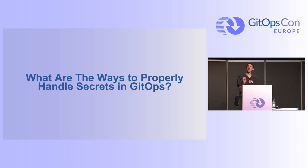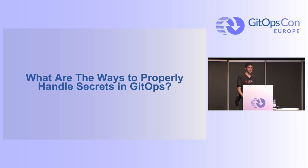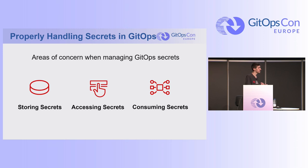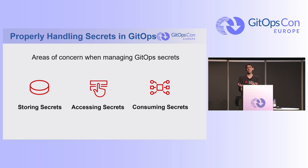What are the proper ways to manage and handle secrets in GitOps? There are three areas I'm going to touch upon: one is how you store your sensitive data, two is how you access the sensitive data, and three is once you have access to them, how do you consume them?